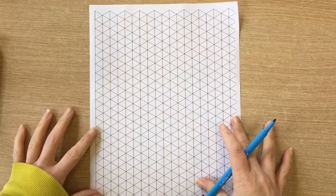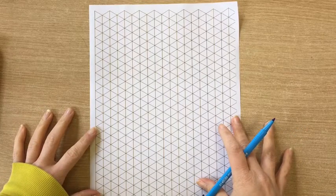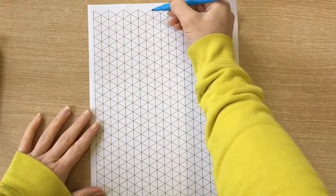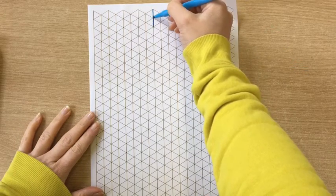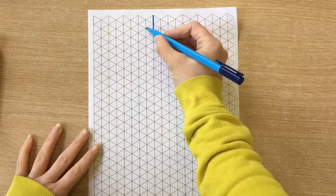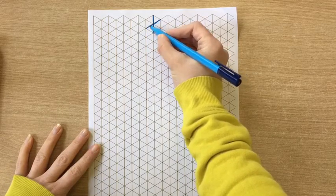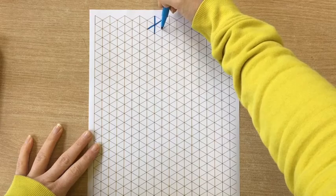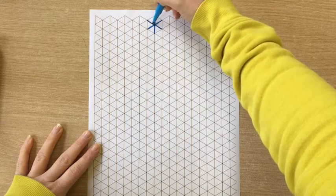So an isometric grid looks like this and you have three sets of lines. You've got vertical lines come straight down. You've got lines that go up from bottom left to the top right and then you've got another set of lines that go from the bottom right up to the top left.